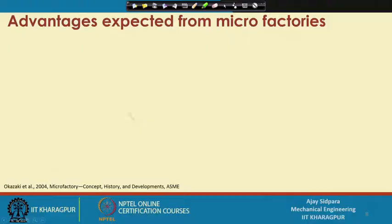Good morning again to our course on Introduction to Mechanical Micromachining. In the last class we were discussing about micro factories, and we have seen that there are a lot of advantages in terms of cost and different technical aspects. We continue with what things we have to take care of during the use of this particular type of machines. Let us continue our discussion on the advantages of micro factories.